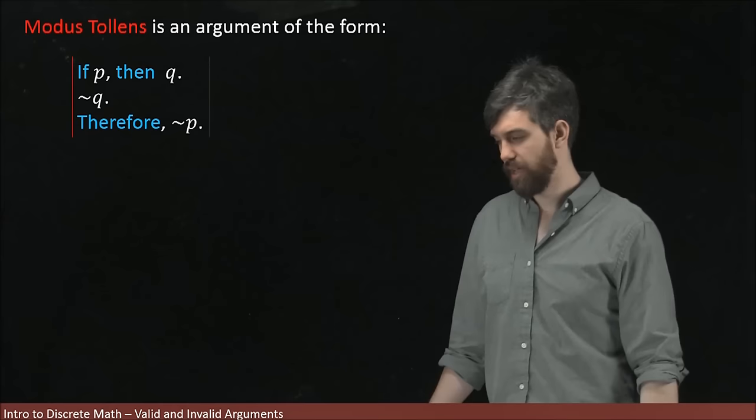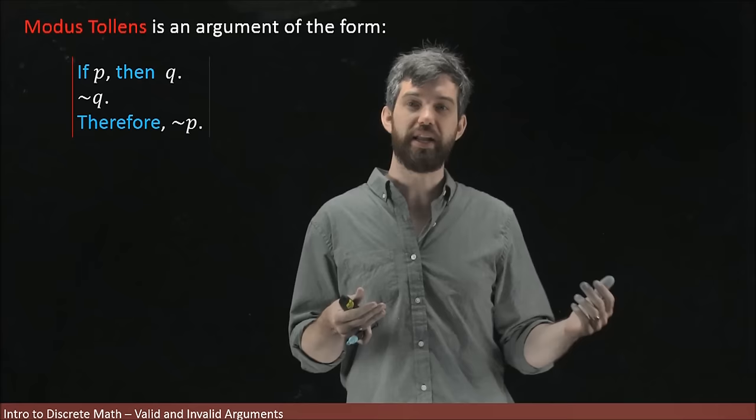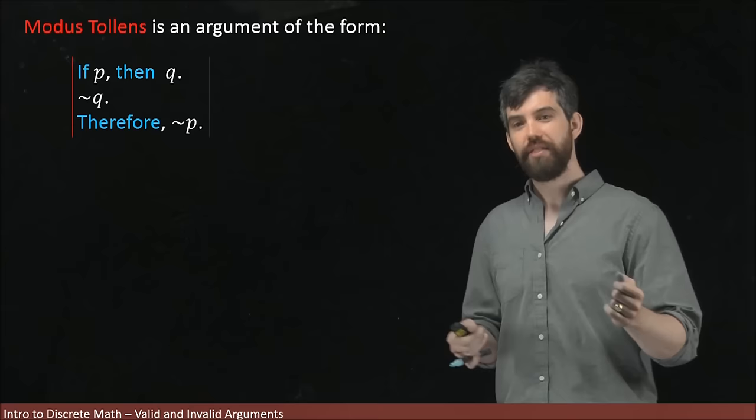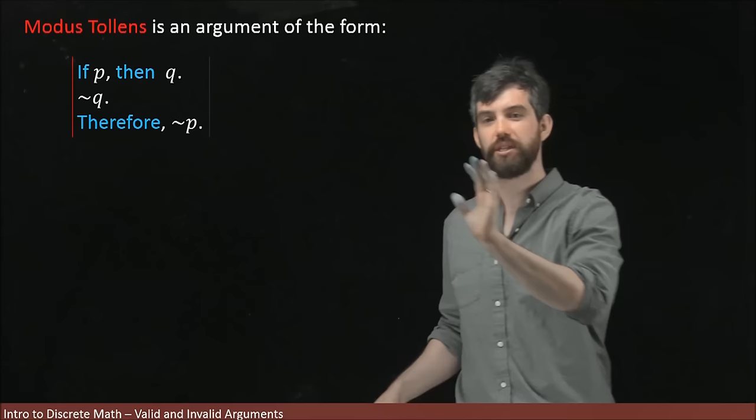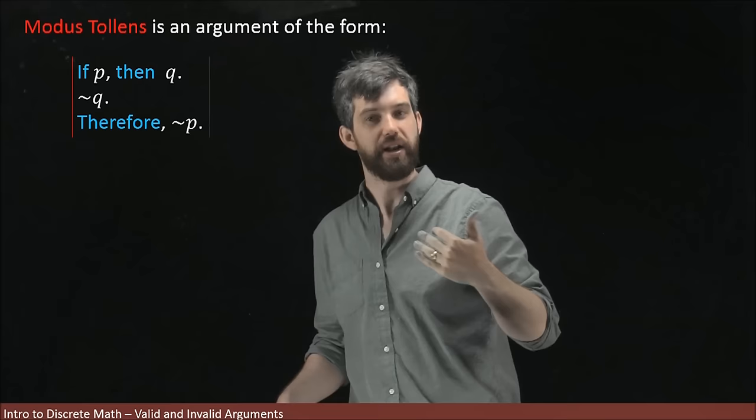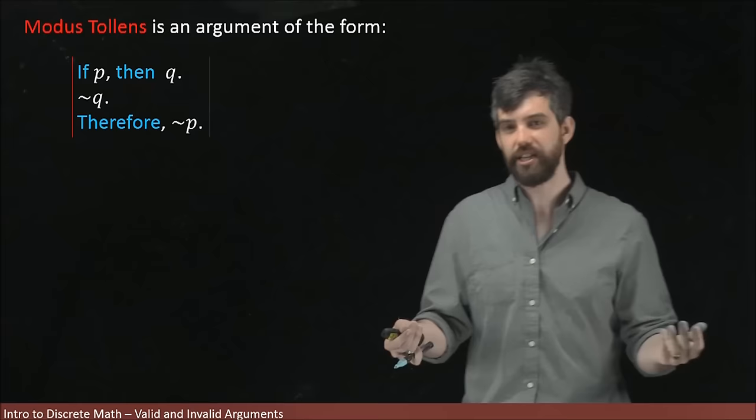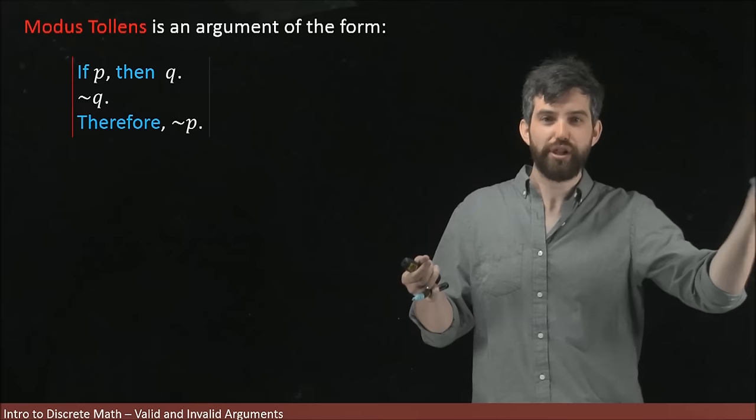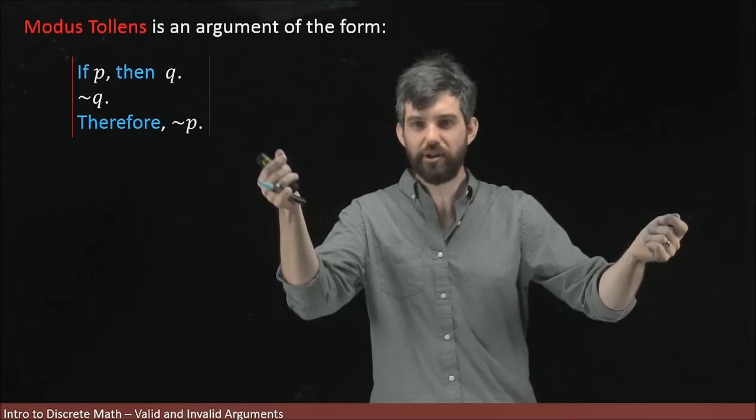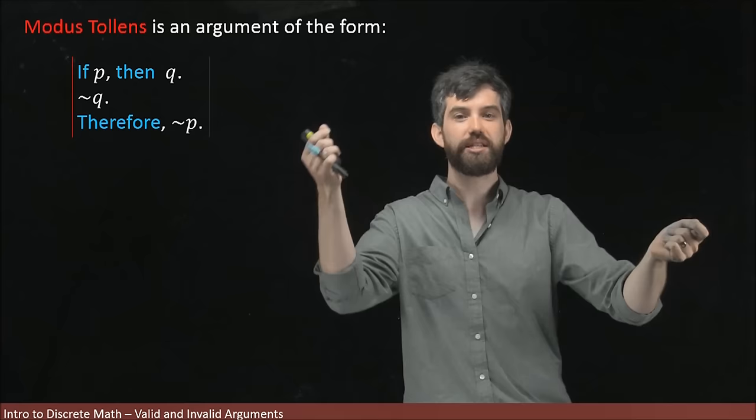Another very famous and important logical argument is a form referred to as modus tollens. And this is the statement. It's one premise, if P then Q. A second premise, not Q. And the conclusion, therefore, not P. And the idea here is that if you have a conditional that P implies Q, but that your conclusion is false, it could not be that your assumption was true. Because if your assumption was true, your conclusion would have to be true as well.